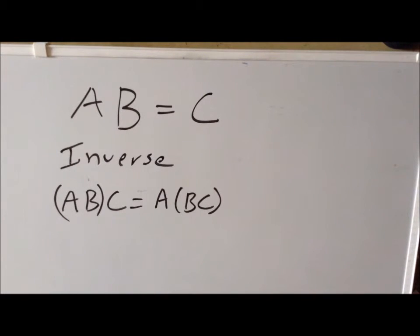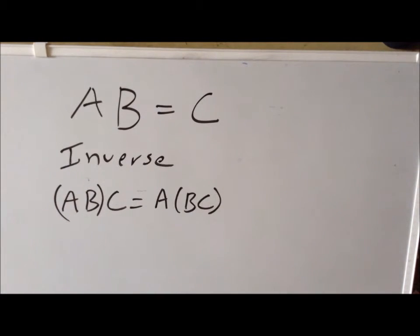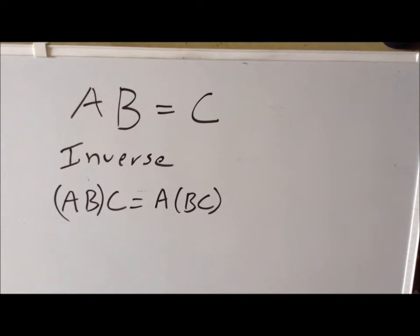The key idea is that the symmetry operations for a molecule will form a group. The set of all symmetry operations for any molecule forms a group, and what we need to do is figure out which group it is. Once we know which group the symmetry operations of a molecule belong to, we can use results from group theory to derive the chemical properties of that compound — using mathematics to help us determine chemical properties ultimately.